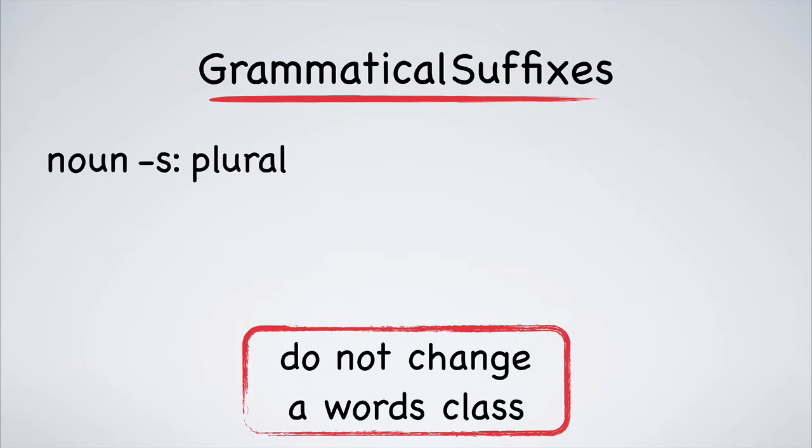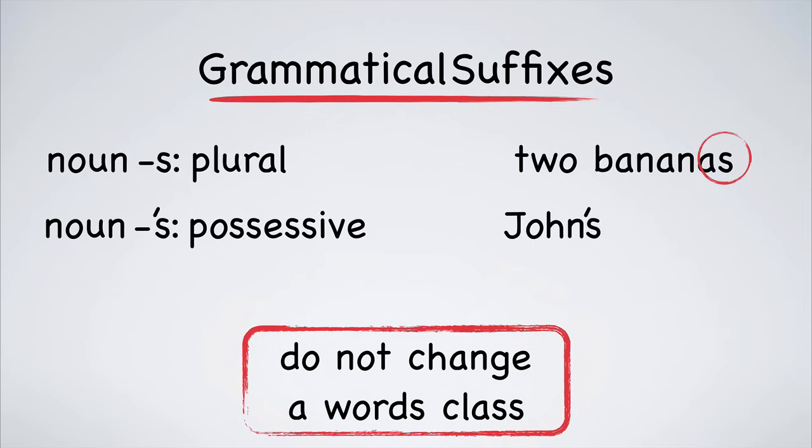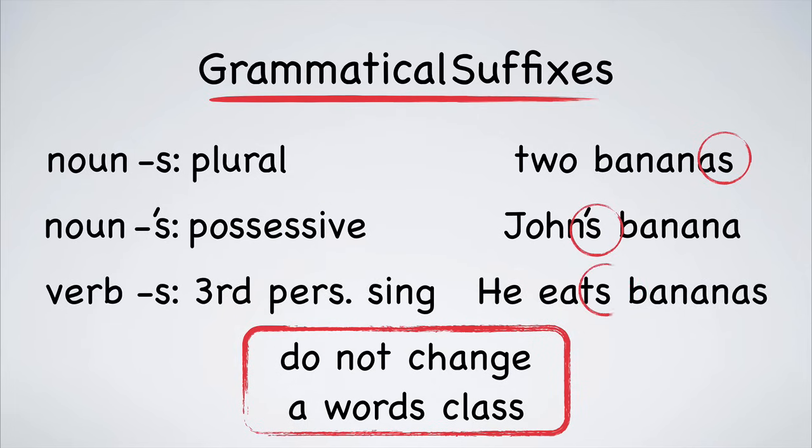A few examples are: the plural -s, one banana, two bananas; the possessive -s, John's bananas; the third person -s, he eats bananas.